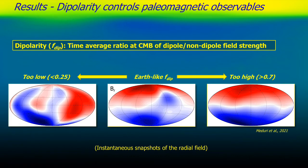Even with these challenges, we can gain insight about how dynamo simulations reflect Earth's magnetic field. The concept I want to look at first is dipolarity, which is commonly considered in the dynamo community. We define dipolarity as f_dip — the time-averaged ratio at the core-mantle boundary of the dipole to non-dipole field strength. There's a Goldilocks zone: if f_dip is too low the field is multipolar or reversing too frequently; if too high, the field is too stable and lacks the variability expected in an earth-like dynamo.